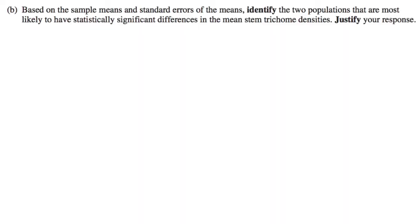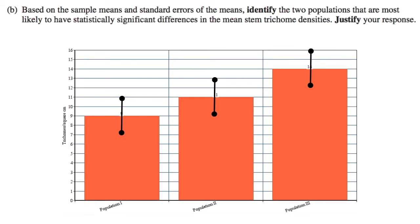Based on the sample means and standard errors of the means, identify the two populations most likely to have statistically significant differences in mean stem trichome densities and justify your response. The confidence interval bars for population 1 and population 3 do not overlap at all — the high bound for population 1 is 11 and the low bound for population 3 is 12. So populations 1 and 3 are most likely to have statistically significant differences in mean stem trichome densities.